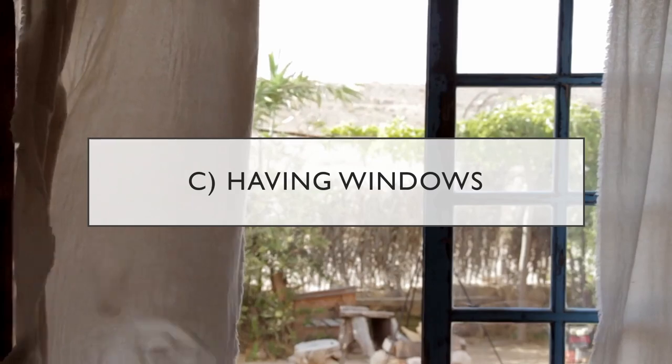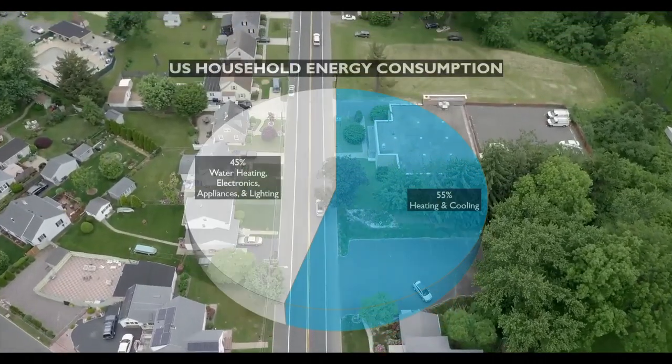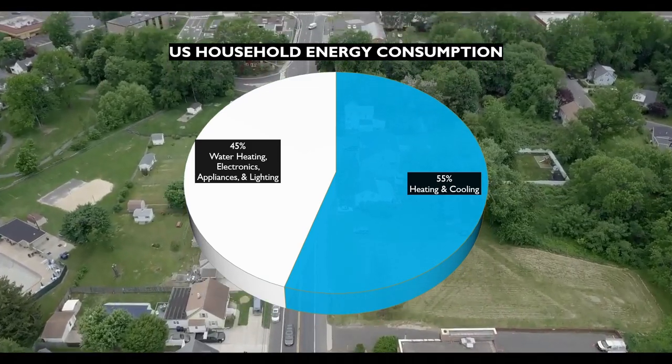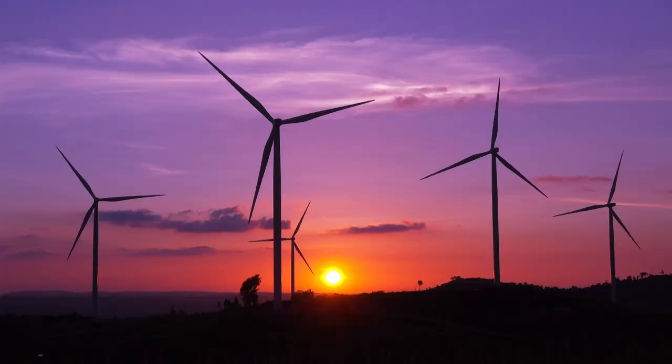If you answered windows, you'd be correct. Turns out that 55% of all the energy used in US households just goes towards heating and cooling our homes, and most of that is lost through uninsulated parts of our homes such as doors and windows.